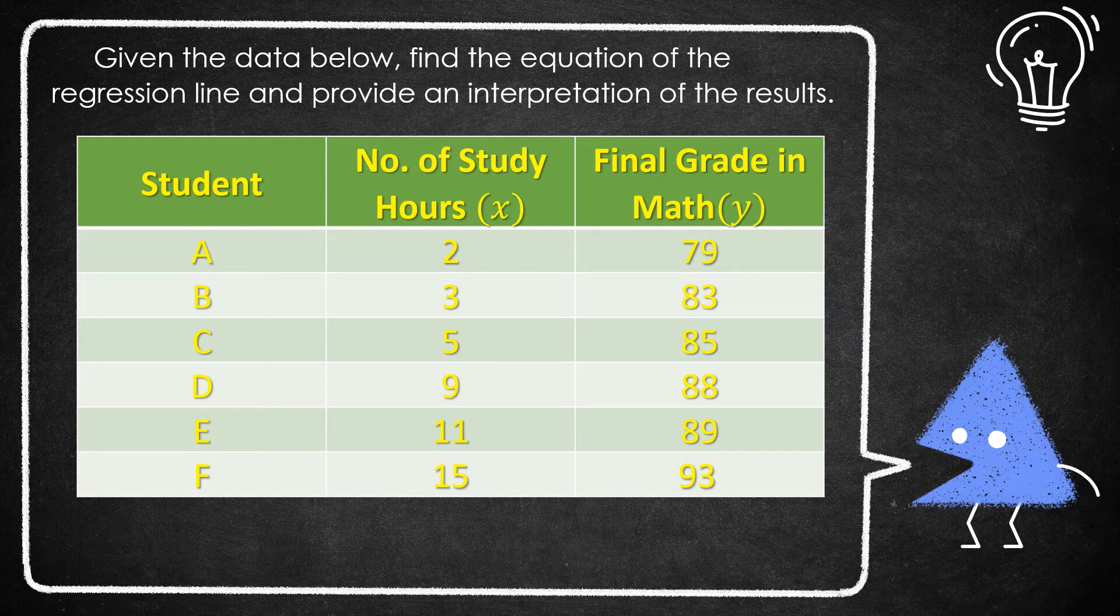Given the data below, find the equation of the regression line and provide an interpretation of the results. We have students A to F with number of study hours from 2 to 15 and final grade in mathematics from 79 to 93.